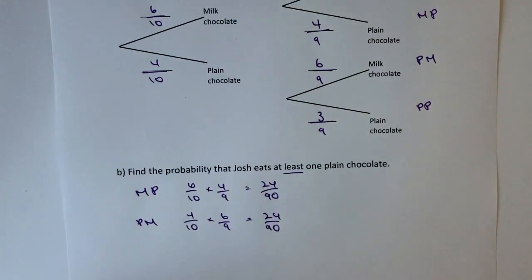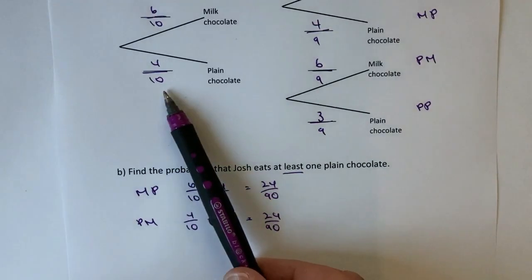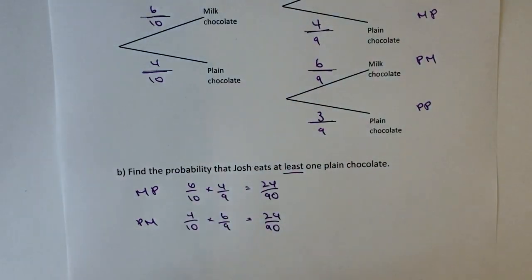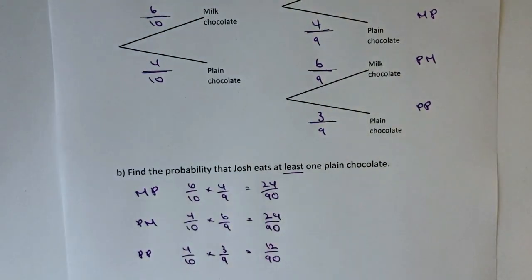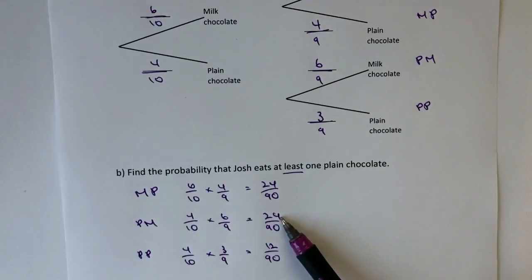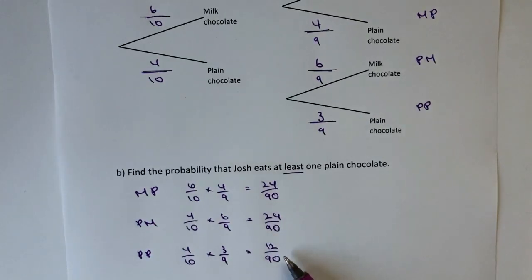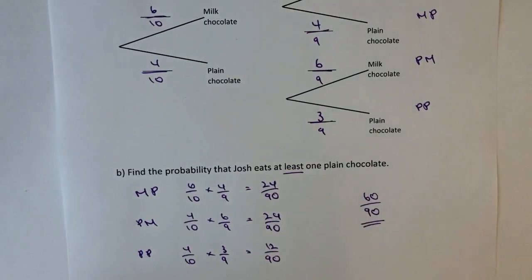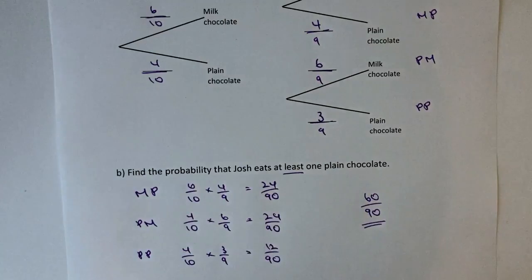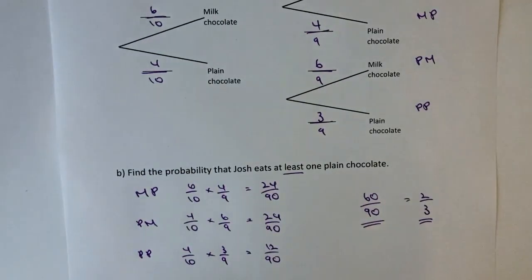The final one we're interested in is the two plains: four out of ten and then three out of nine — plain, plain — four out of ten multiplied by three out of nine, which gives 12 out of 90. So if I add up all of these together I get 24 plus 24, which is 48, plus another 12, giving 60. That would be a total of 60 out of 90 as the answer to this question, or if you prefer you could reduce it down to two-thirds.